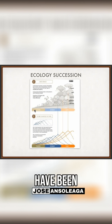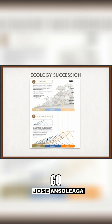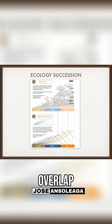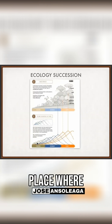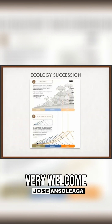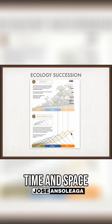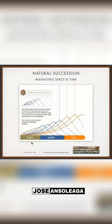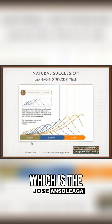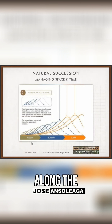With ecological succession, we look at how one stage overlaps another, going up instead of waiting for the next one to go down and then up again. What we do is overlap — boom, boom, boom — through perturbations, placing plants where we know they will be very welcome. We stack time and space in our process. The consortia — the different families of plants — are connected along the succession process.